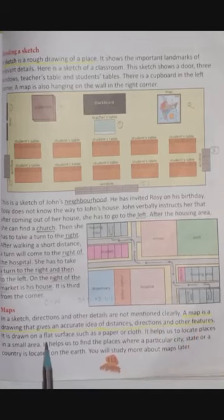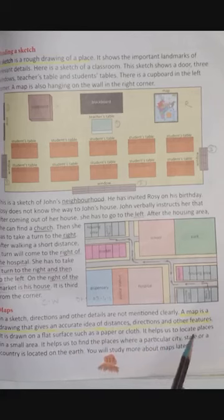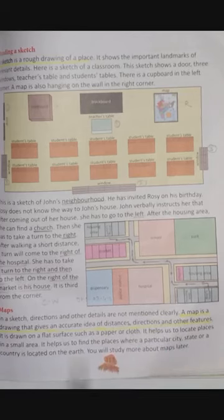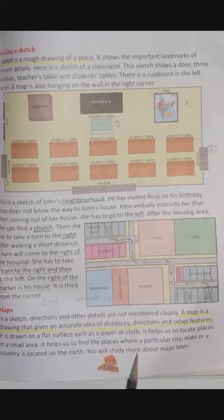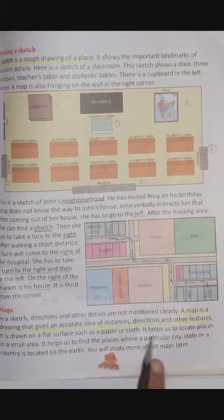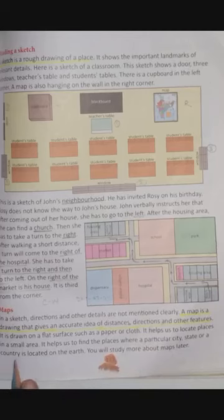Map is a drawing that gives an accurate idea of distance, direction and other features. It is drawn on a flat surface such as paper or cloth — यह plain सपाट जगह पर, paper या cloth पर draw किया जाता है। It helps us to locate places in a small area.